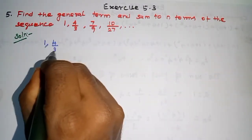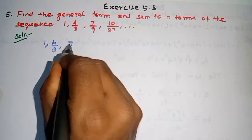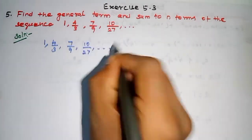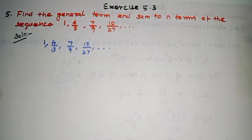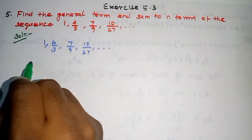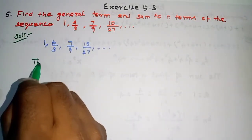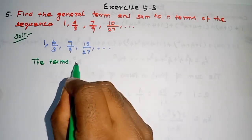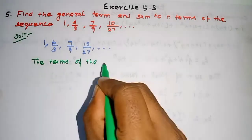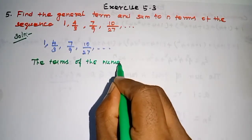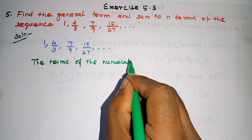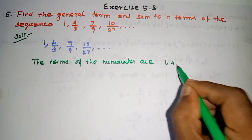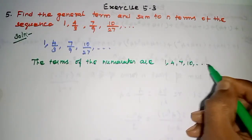Let me copy the sequence: 1, 4/3, 7/9, 10/27, up to n terms. The terms of the numerator are 1, 4, 7, 10, and so on. We will work with the numerator and denominator separately.